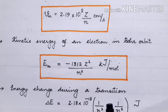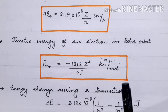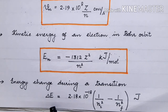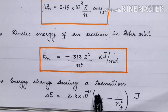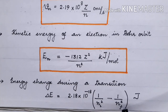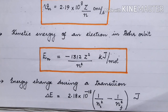Energy change during a transition: when an electron jumps from a lower level to a higher level, it absorbs a certain amount of energy. Likewise, when an electron jumps from a higher level to a lower level, it releases energy. The energy change during a transition is given by: ΔE = 2.18 × 10⁻¹⁸ × (1/Nᵢ² − 1/Nf²), where Nᵢ is the initial orbit and Nf is the final orbit. These are the main postulates of the Bohr model of atoms.